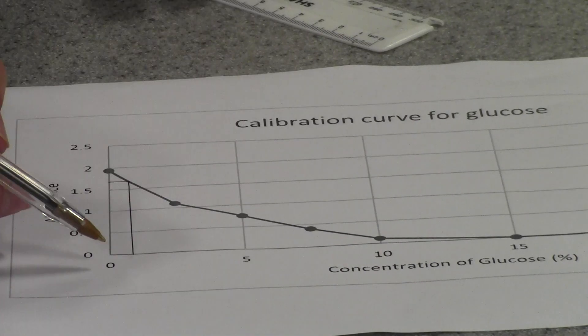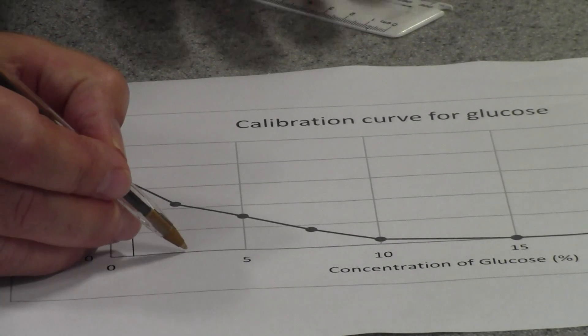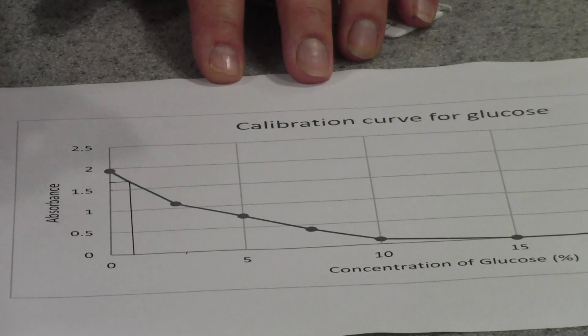Or actually it could be any reducing sugar will react with the Benedict's and so in this case that would be slightly less than 0.1%.